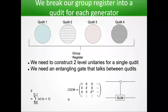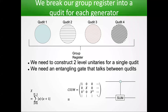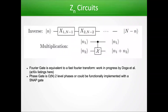When we break our group register into qudits for each generator, we need two sets of operations: single-qudit operations that, combined with a two-qudit operation, give us a universal gate set. One set is arbitrary single-qudit rotations, and then a controlled-sum gate that shifts the target state by some amount depending on what the control state is. For Zn as an example, we can break this down into one qudit for the gauge register; the inverse is just a set of single-qudit operations that are Clifford-like, and multiplication is this controlled-sum gate — not too different from many representations of U1 already.